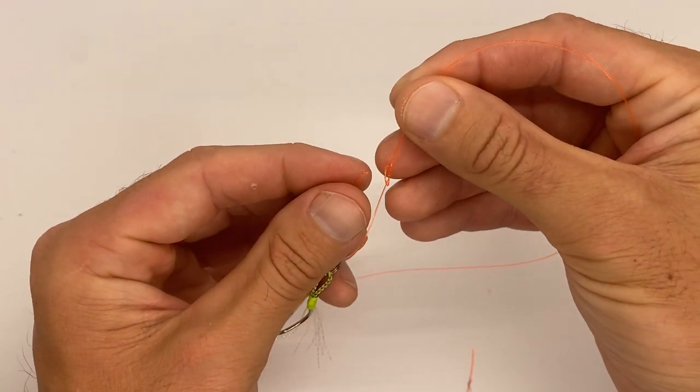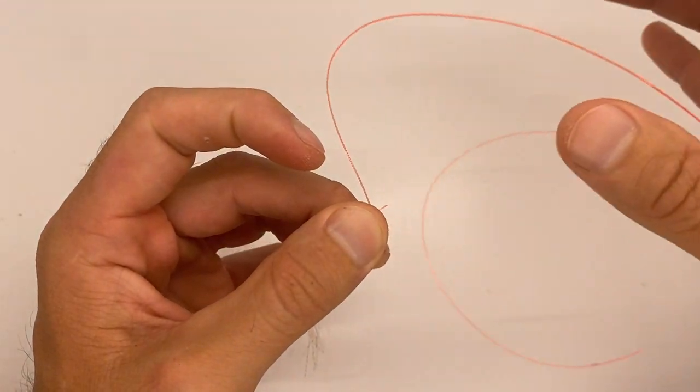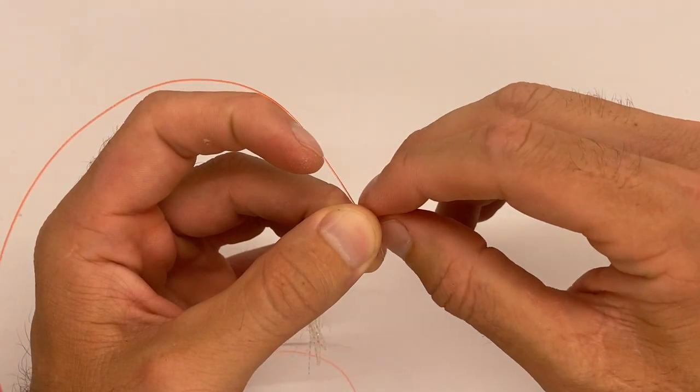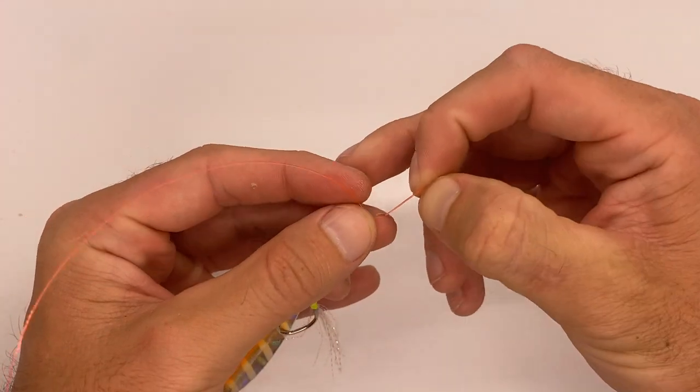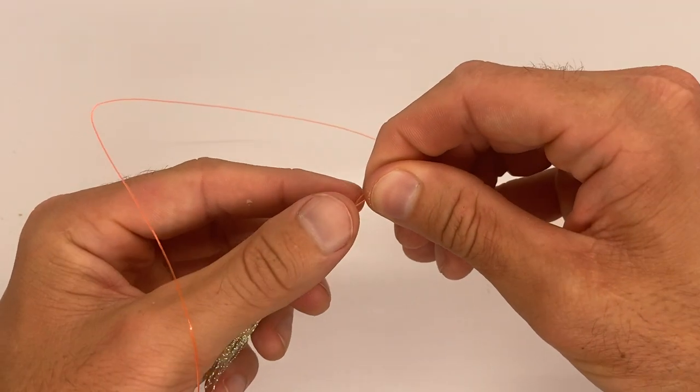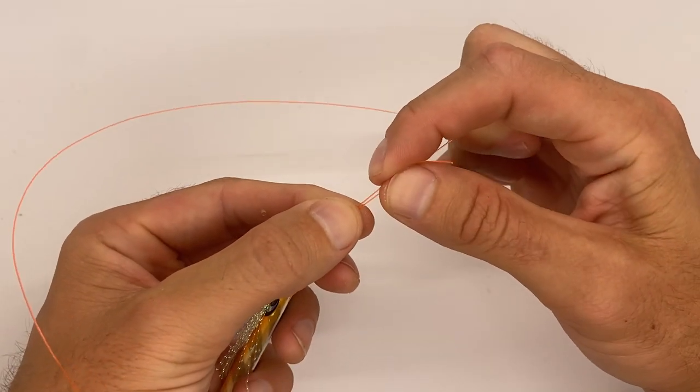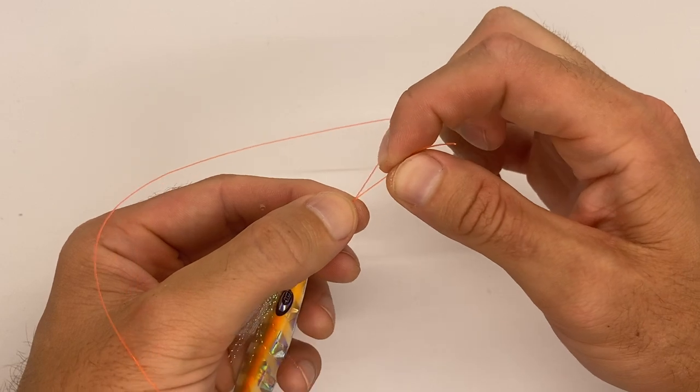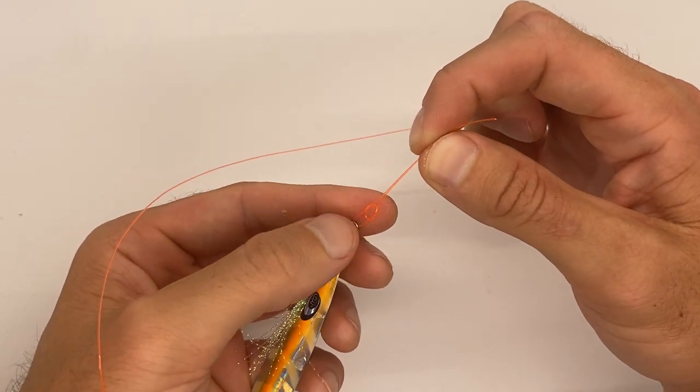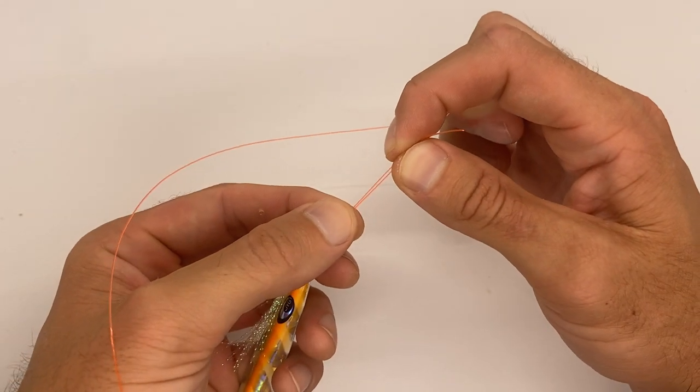What you want to do now is pass the end of that line through the loop of your overhand knot, pull through, and now you want to set your loop to where you're going to want it when you're done. So you want a little bit of room there to give the jig some action, but not too much. I like to pull down right there.